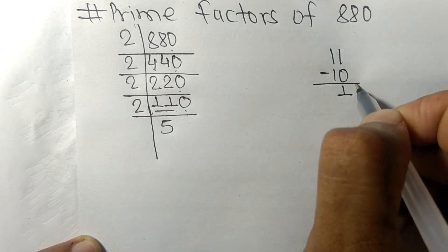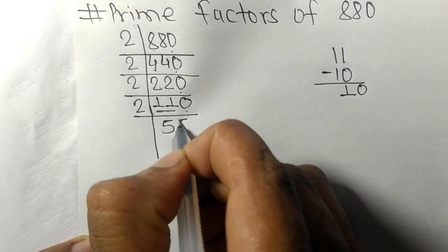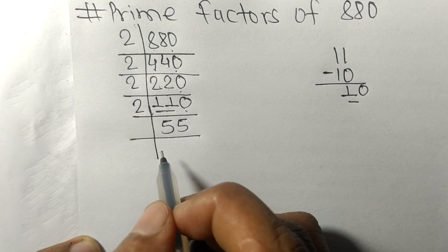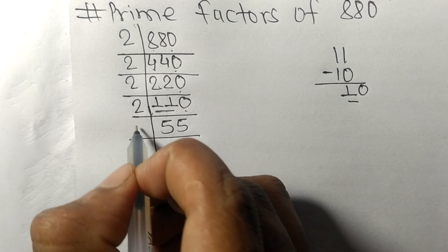5 times 1 is 5, 5 times 1 is 5. Now we got 11, which is exactly divisible by 11.